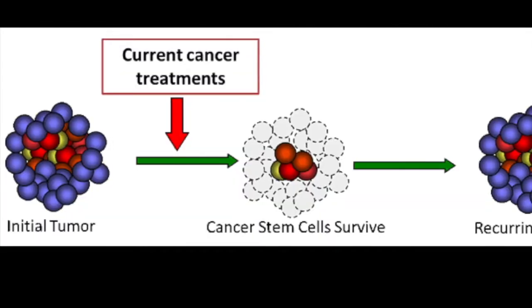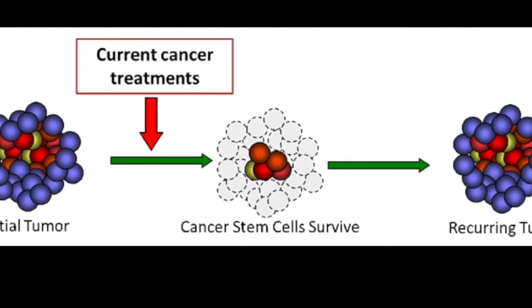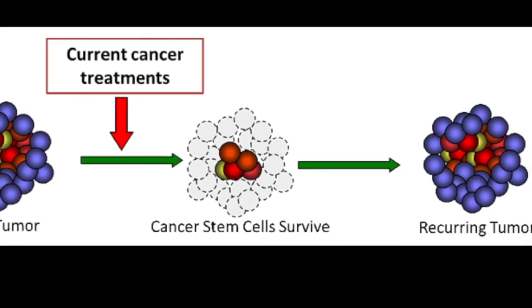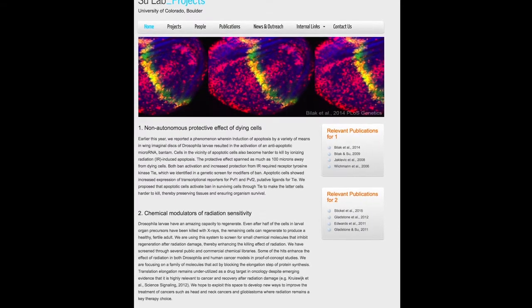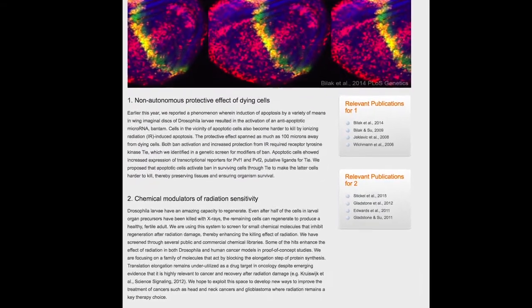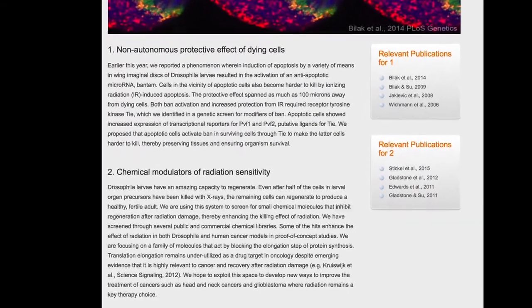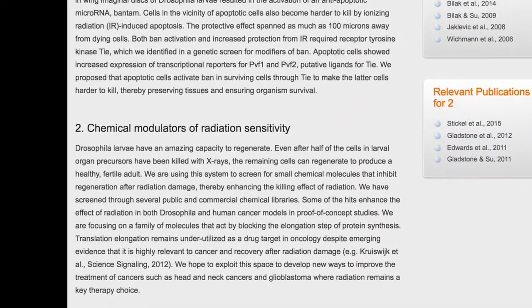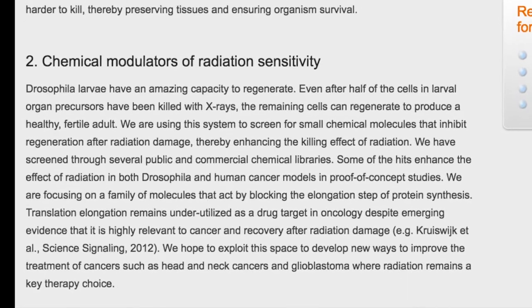Cancer is a very prevalent disease and there are still millions of people who are diagnosed and not able to be treated, so new therapies are needed. Combination therapy between chemotherapy and radiation has proven to be even more effective. The laboratory of Tin Tin Siu in MCDB has developed a method using fruit flies to test drugs combined with radiation therapy, and students in MCDB-2171 work in collaboration with the Siu Lab on this project.